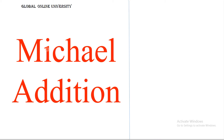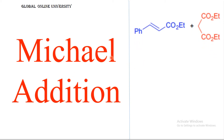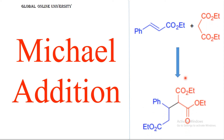Hello friends, welcome to Global Online University. Today we are going to learn about one of the important name reactions of organic chemistry — that is the Michael addition. Michael addition is a 1,4-addition of a carbon compound. One component is the Michael acceptor and the other is the Michael donor, and in the presence of base it forms the Michael adduct.